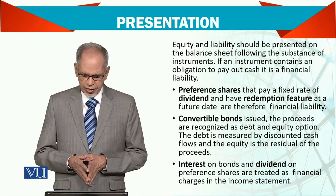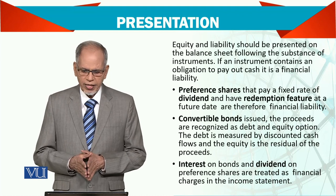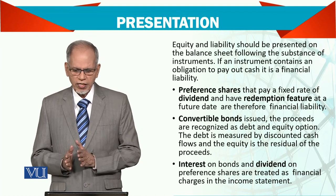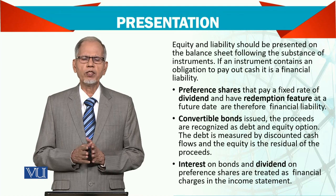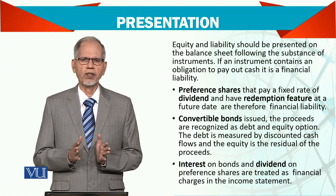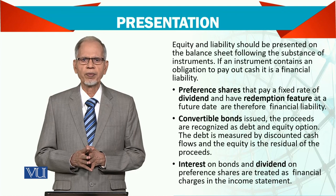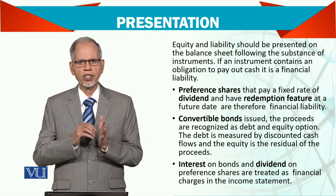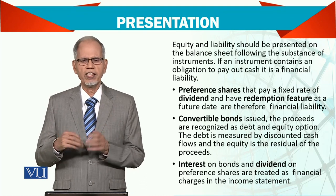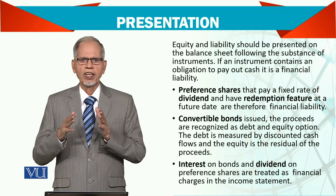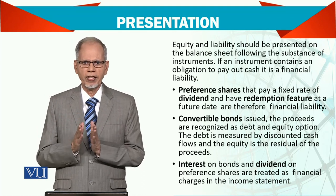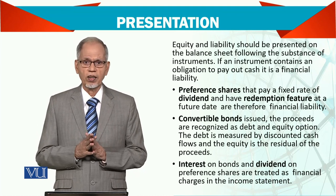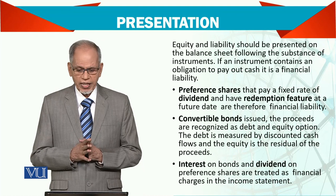Preference shares that pay a fixed rate of dividend and have a redemption feature at a future date are also financial liabilities. Previously preference shares were reported as part of equity, but not anymore. Because when you issue them you clearly state a rate, say 10%, and you must pay that 10% every year — ordinary shareholders cannot be paid unless preference shareholders receive their 10% first. If they also have redemption or conversion rights, that further confirms it is a liability.